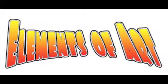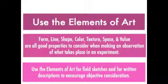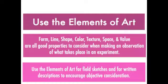Use the elements of art. Form, line, shape, color, texture, space, and value are all good properties to consider when making an observation of what takes place in an experiment. Use the elements of art for field sketches and for written descriptions to encourage objective consideration.